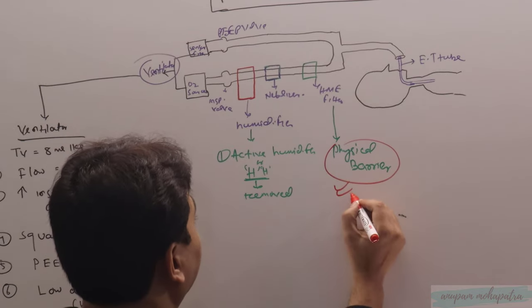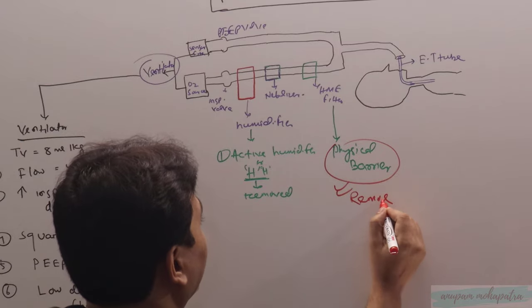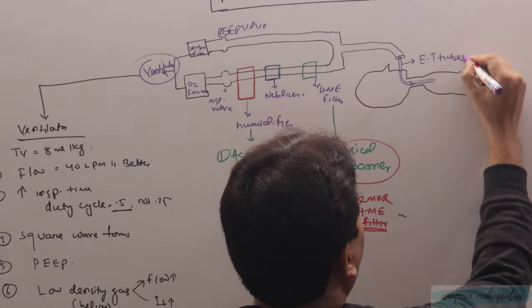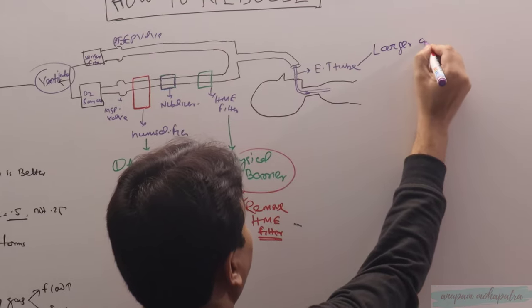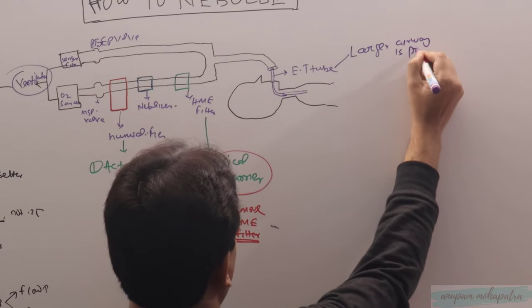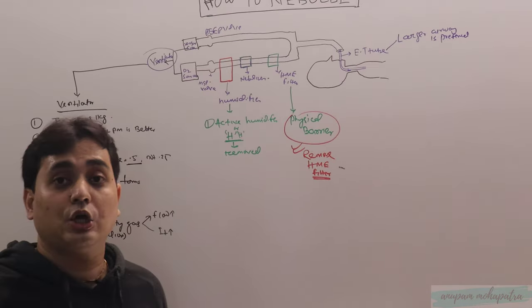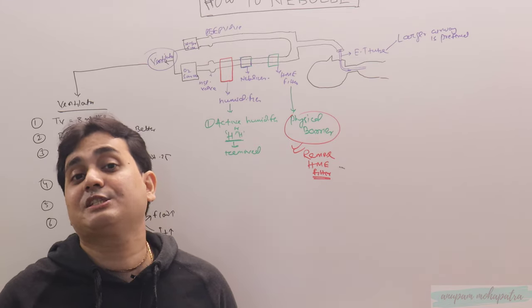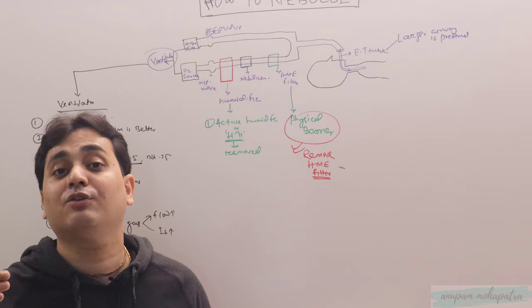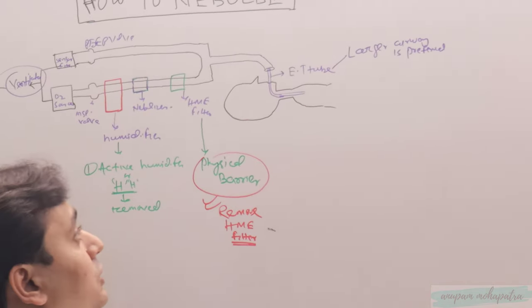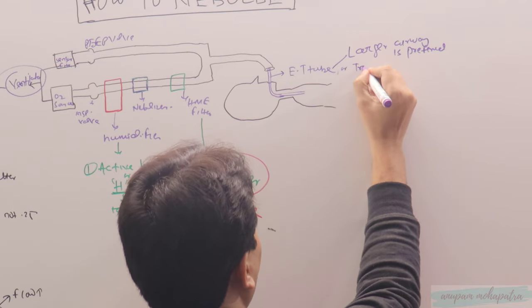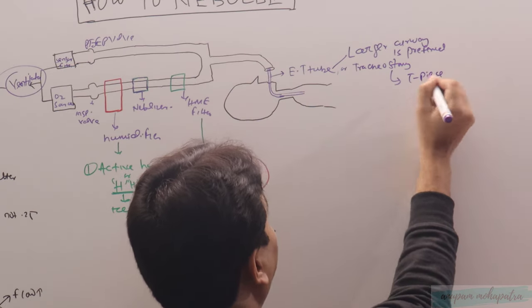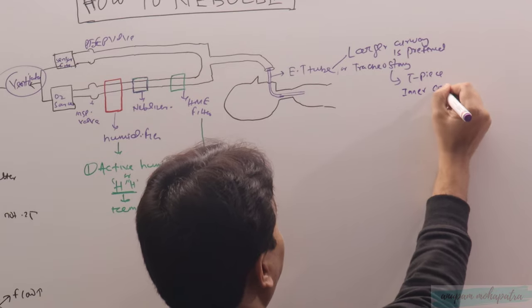Larger airways are preferred because the smaller the airway, the larger is the resistance. When resistance is larger, impaction and sedimentation mechanisms will take precedence over diffusion, so there will be less delivery of aerosol to the alveoli. Larger airway is always preferred, either ET tube or tracheostomy. However, in case of tracheostomy, remember to put a T-piece, and if there is an inner cannula, always remove it.